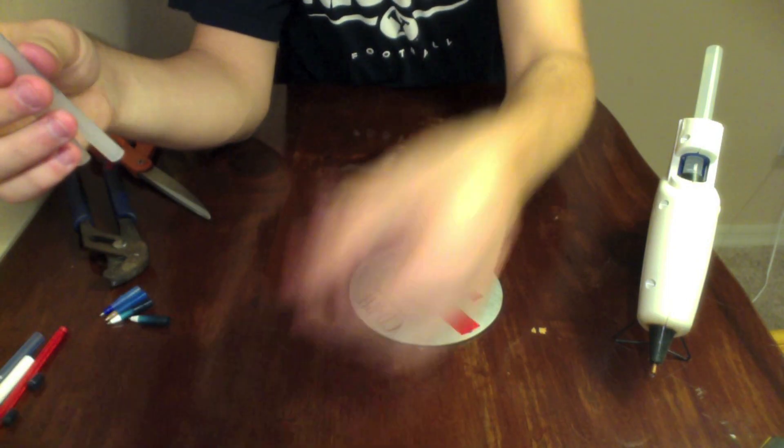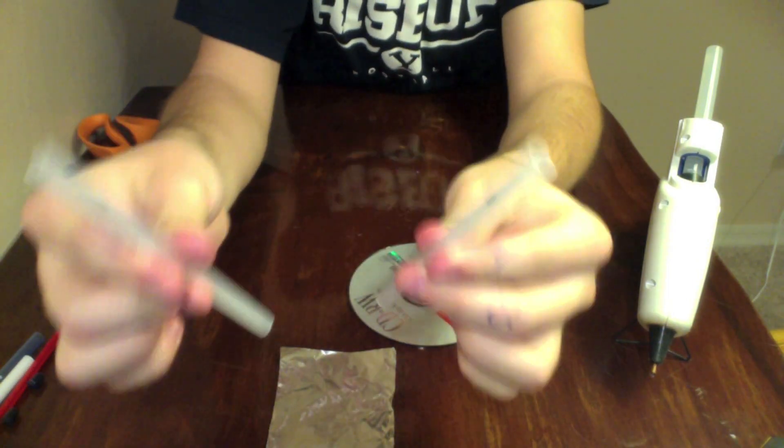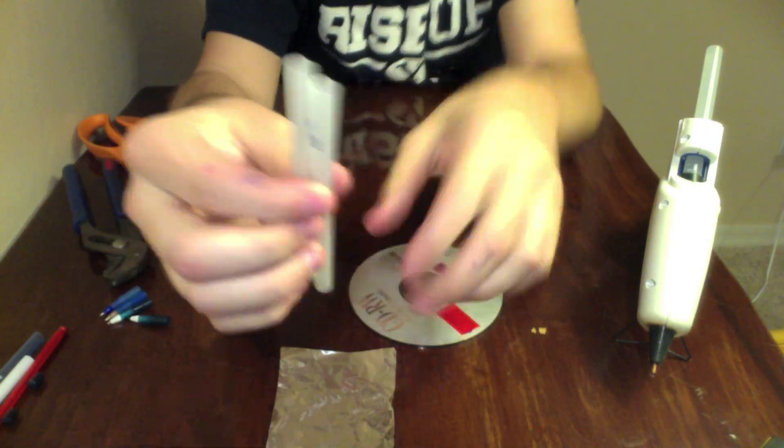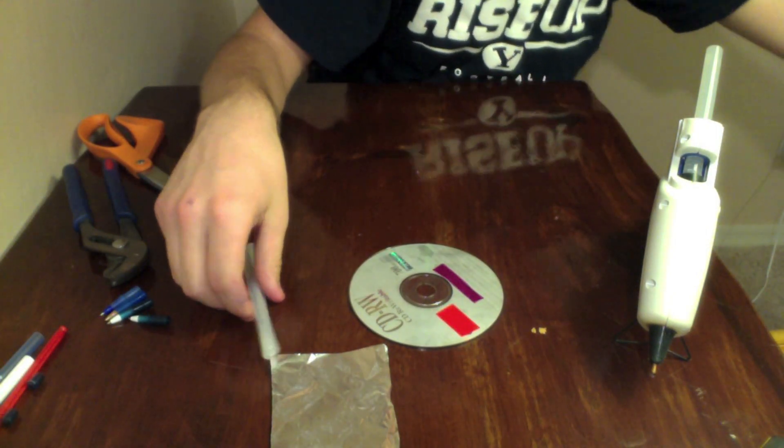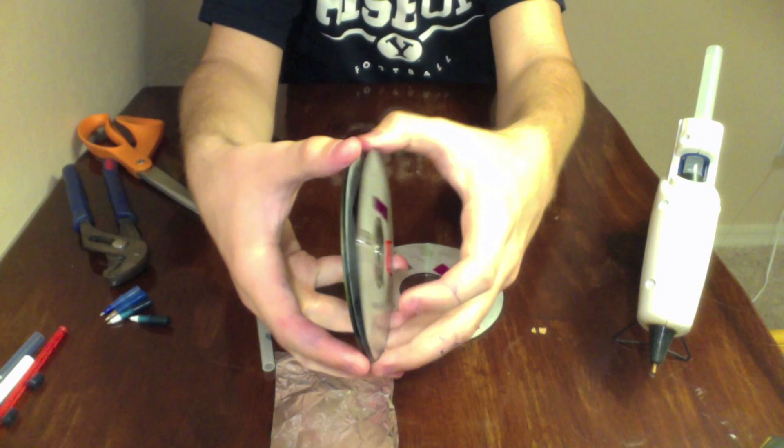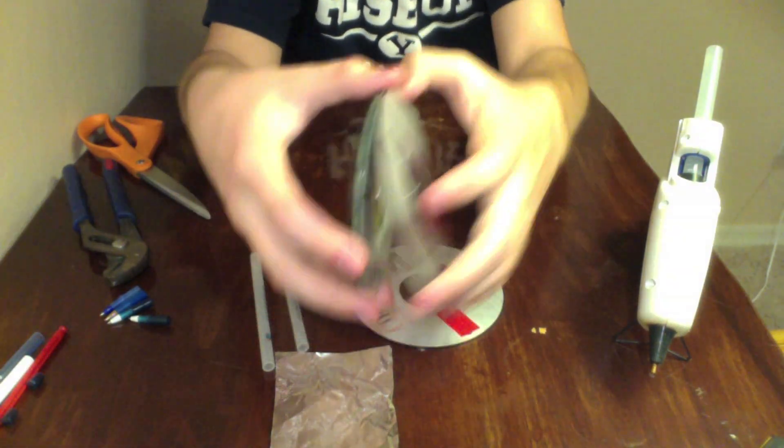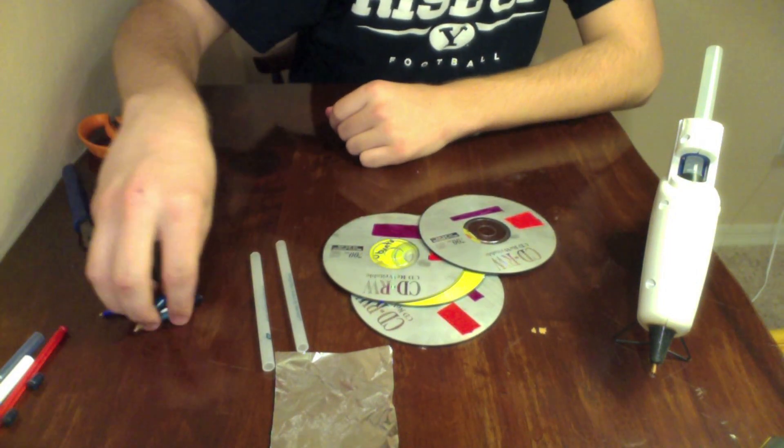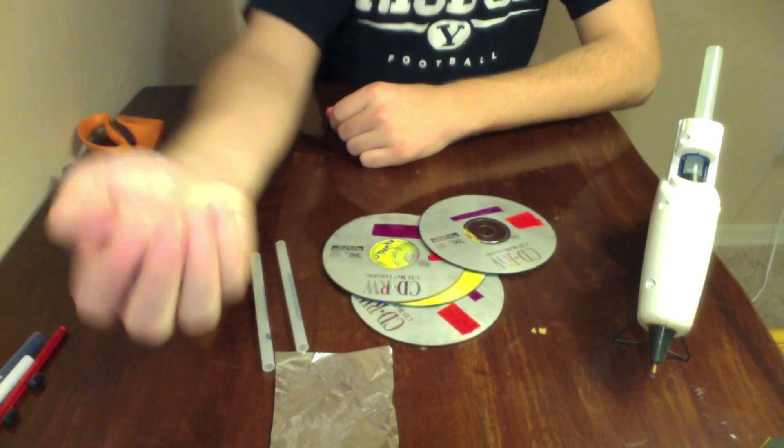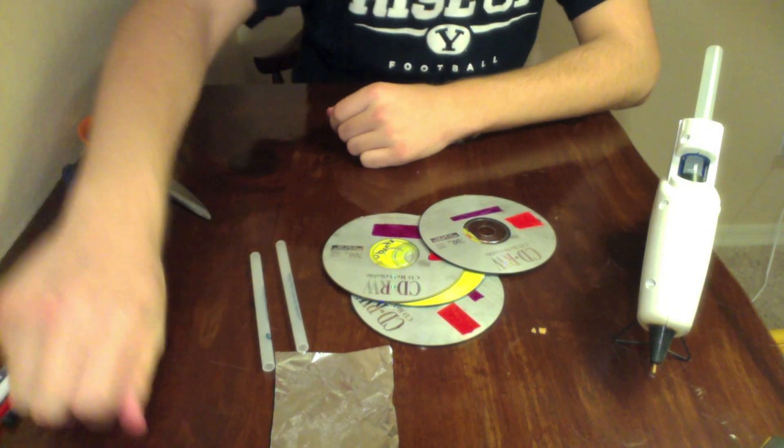Okay, so now you've got tinfoil, your two pen casings, these are going to be your axles, four CDs or DVDs that you don't want to use ever again, and your four pen tips.